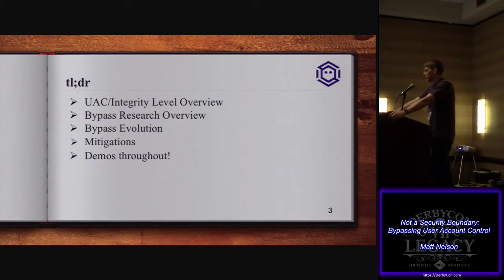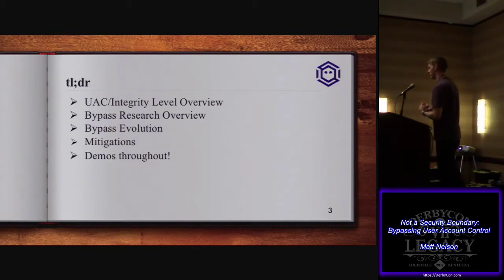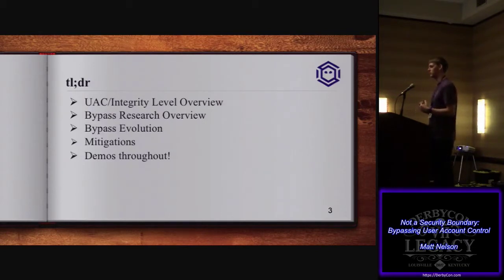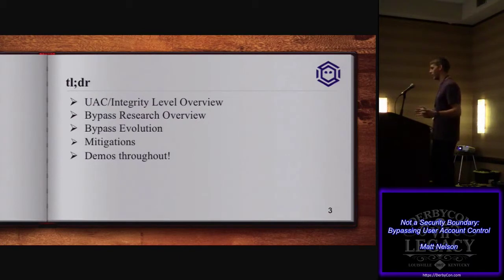The short version of what I'm going to be talking about today is an overview of UAC and the history of it, going back from its very first birth to now and how it's evolved, or how bypasses have evolved. We're going to start talking about what UAC is, how the integrity level model works, and go into the research methodology. We'll walk through methodology for one specific bypass, how various bypasses have evolved over the last few years, then mitigations, and then obviously demos throughout.